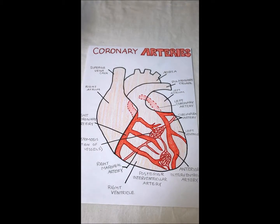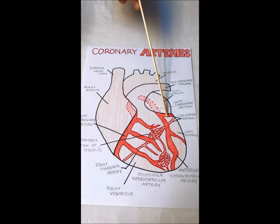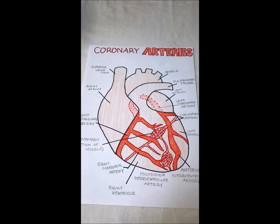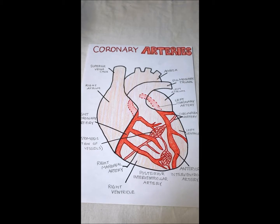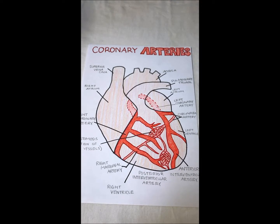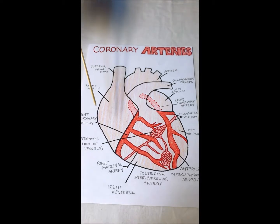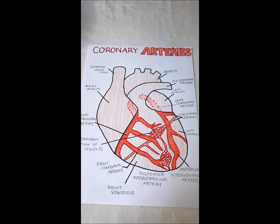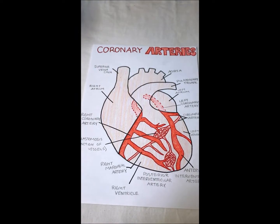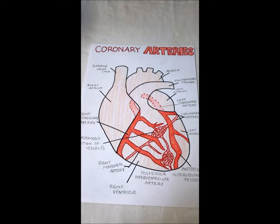Now we have the coronary arteries. Starting with the left coronary artery, it feeds the circumflex artery and the anterior interventricular artery. The circumflex artery feeds the left atrium and posterior part of the left ventricle, and the anterior interventricular artery supplies the anterior walls of both ventricles and the interventricular septum. The right coronary artery feeds the marginal artery and the posterior interventricular artery. The marginal artery feeds the lateral part of the right side of the heart, and the posterior interventricular artery feeds the remaining part of the posterior ventricles.